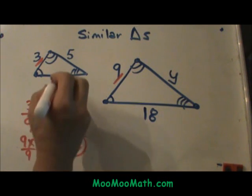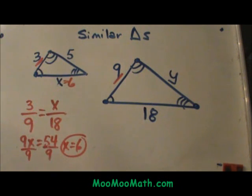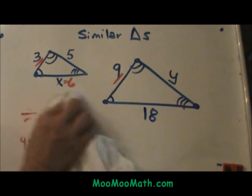So that means this side up here is 6. Now I will show you another shortcut in a minute, but that is basically how you solve for x. Now let's solve for y.